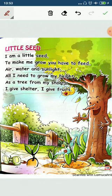One more time — I am a little seed, to make me grow you have to feed. Air, water and sunlight, all I need to grow my height. As a tree from my shoots, I give shelter, I give fruits. Okay children, interesting poem, isn't it?